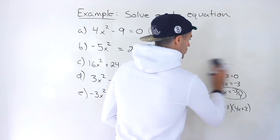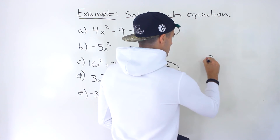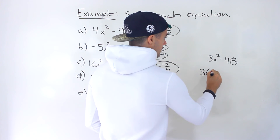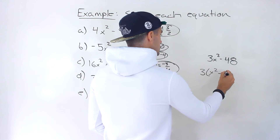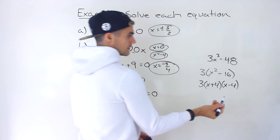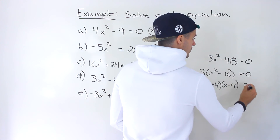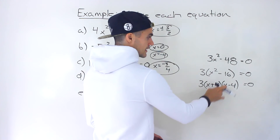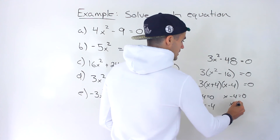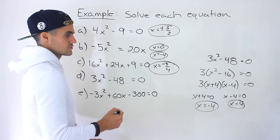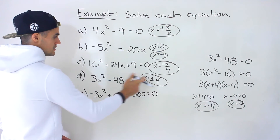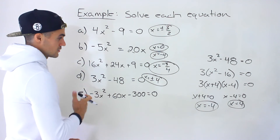Moving on to part D: 3x squared minus 48 equals 0. We can factor out a 3, leaving 3(x squared minus 16) equals 0. Notice x squared minus 16 is a difference of squares, which factors to (x plus 4)(x minus 4). Bringing back the equation, 3(x plus 4)(x minus 4) equals 0. Either x plus 4 equals 0, giving x equals negative 4, or x minus 4 equals 0, giving x equals positive 4. So the two solutions are x equals plus or minus 4. You can plug either into the original and the left side will equal 0.